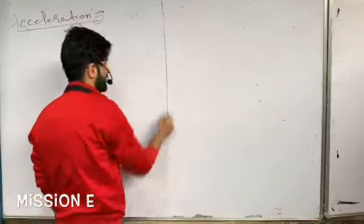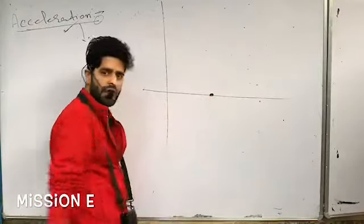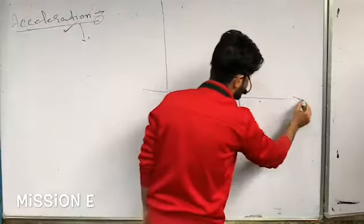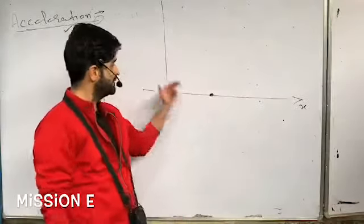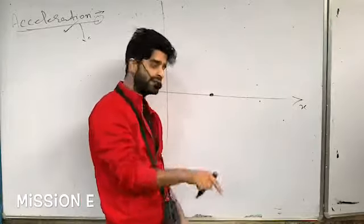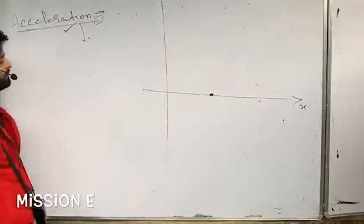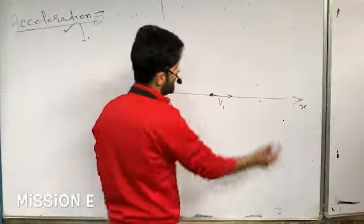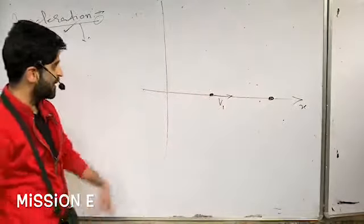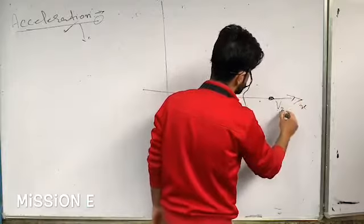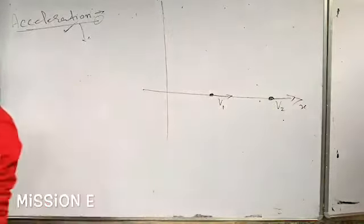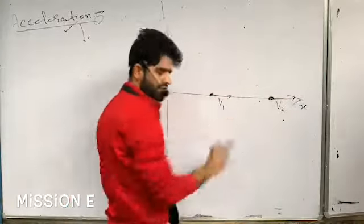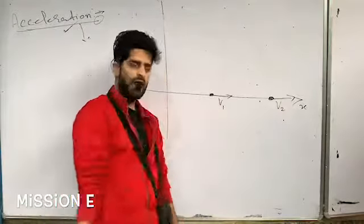For one-dimensional motion, place a particle on a particular axis — let us suppose the particle is moving on the x-axis. At some instant of time, the particle is moving with a velocity v1, and at a later instant of time, the velocity has changed to v2.